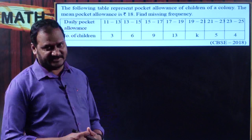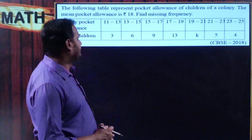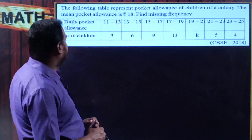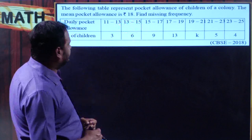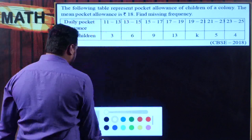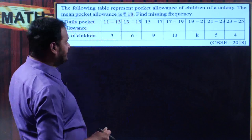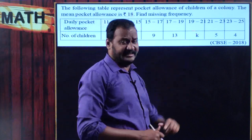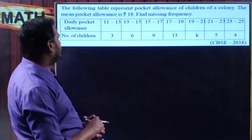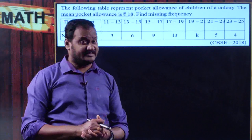Hello students, let us continue with the problems from statistics which were given in previous board examinations. The problem is: the following table represents pocket allowance of children of a colony. The mean pocket allowance is 18 rupees — that is the mean of the given distribution. Here k is the missing frequency. I would find the arithmetic mean of this data by using the step deviation method.